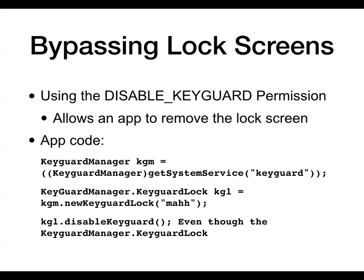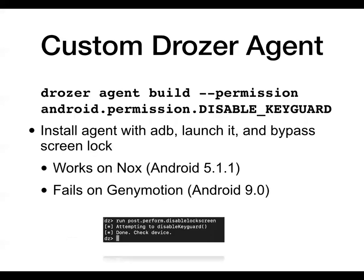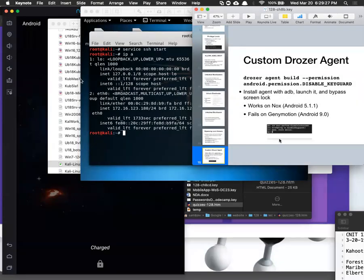Another option is the disable keyguard permission. Your SMS app has the ability to pop something up on the screen even when the phone is locked; other apps have the ability to turn off the lock screen entirely. If you had an app under your control that could turn off the lock screen, you could totally get past it. You can use KeyguardManager in Java to open and turn off the keyguard, which is the lock screen. You can build a Drozer agent with that permission and then unlock the phone. This is in the homework and I'm set to demonstrate it here.